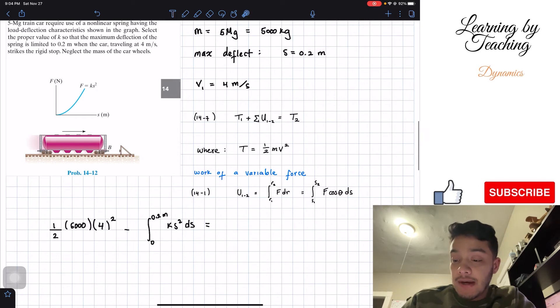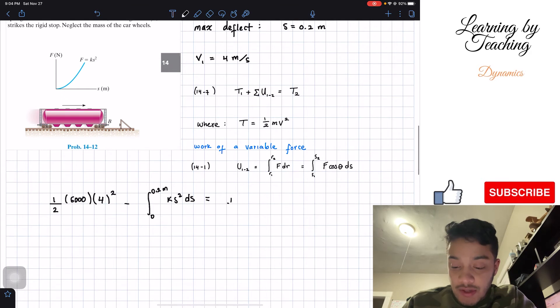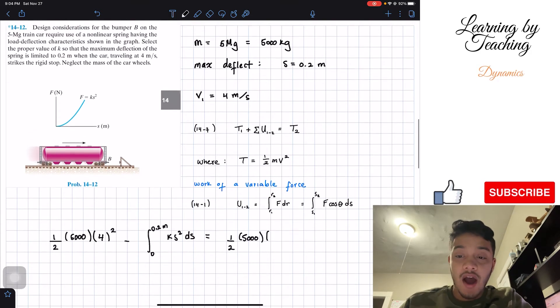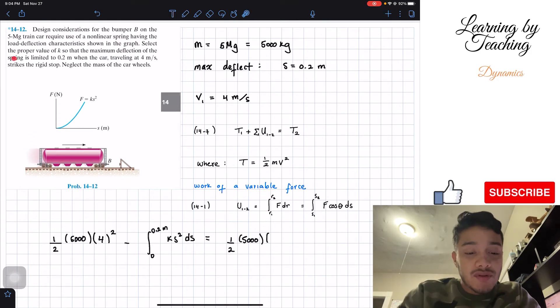Our kinetic energy at the end. Well we're going to have one half the mass which is 5000 multiplied by the final velocity, but the final velocity itself is not given.